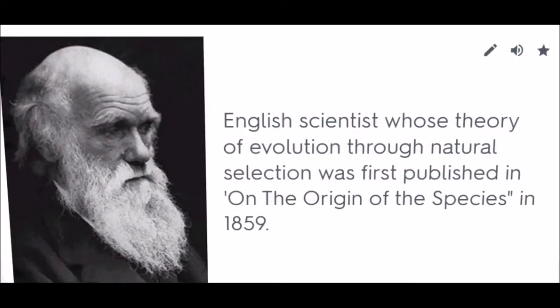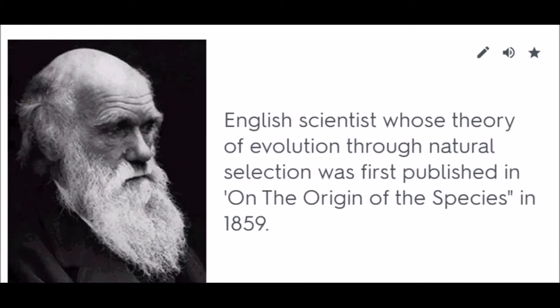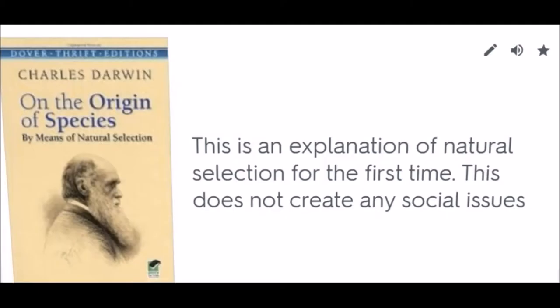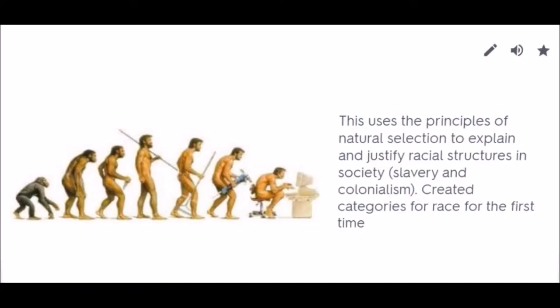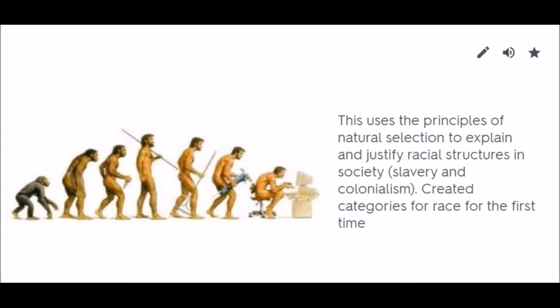Charles Darwin: An English scientist whose theory of evolution through natural selection was first published in On the Origin of Species in 1859. This is an explanation of natural selection for the first time and does not initially create social issues. Social Darwinism: Uses the principles of natural selection to explain and justify racial structures in society. Created categories for race for the first time.